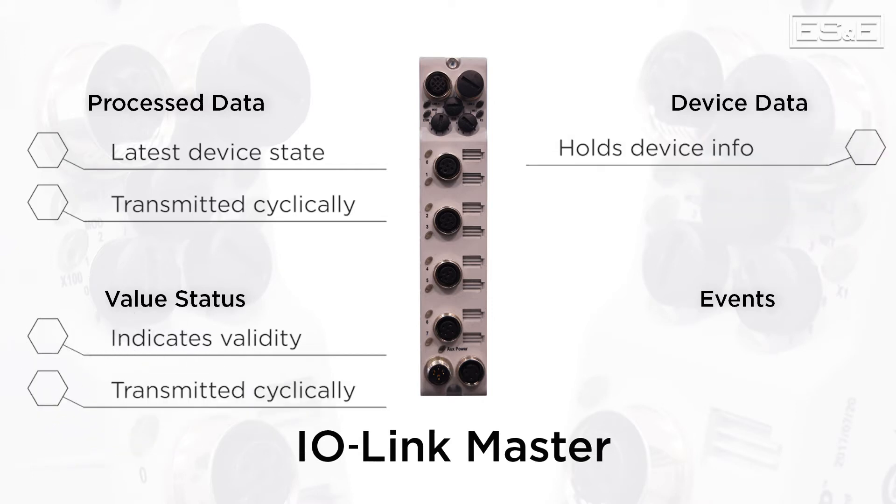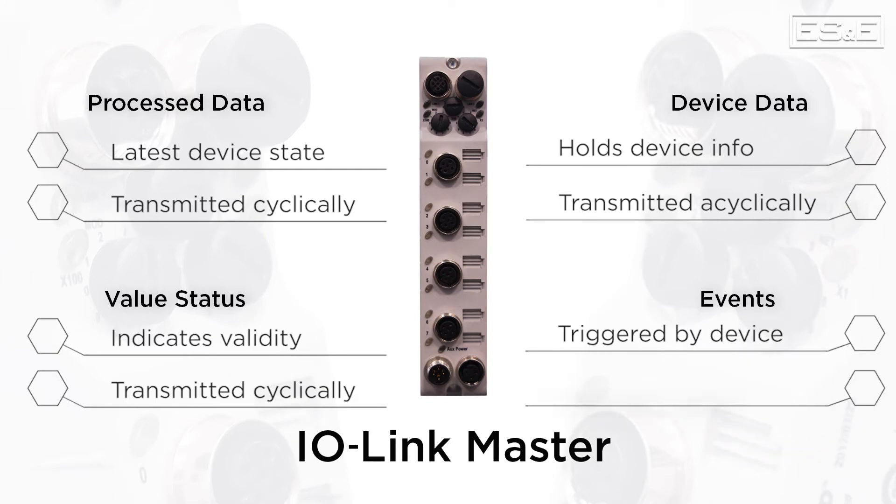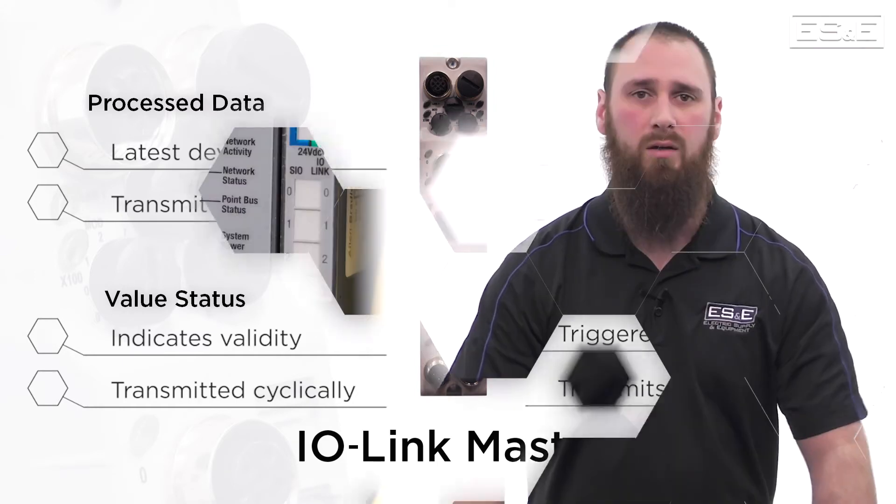The device data holds detailed information about a device, such as a serial number or revision. It also holds more advanced information, such as device parameters or diagnostic information. Device data is sent acyclically at the request of the IO-Link Master. Events are triggered by the device and are sent to the IO-Link Master as an error or warning message.